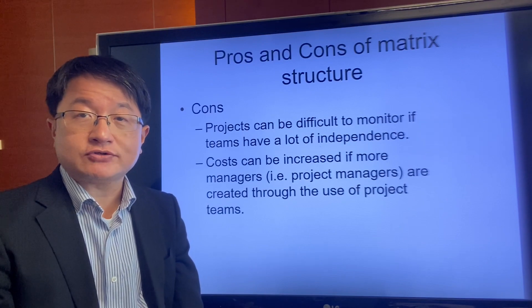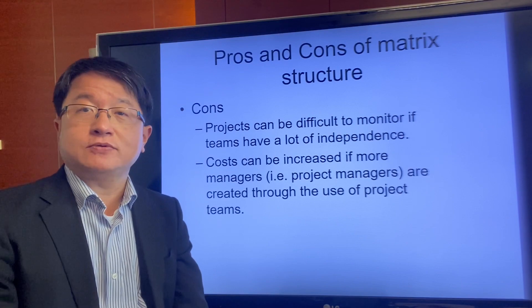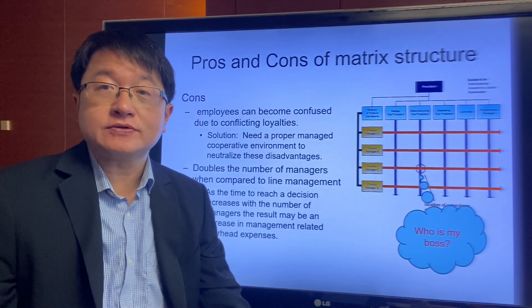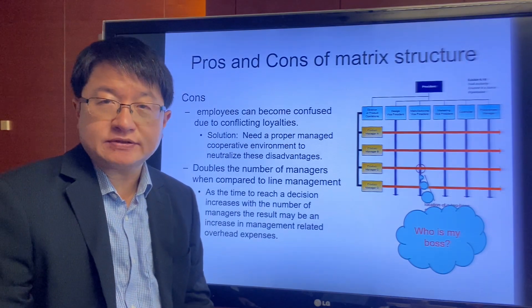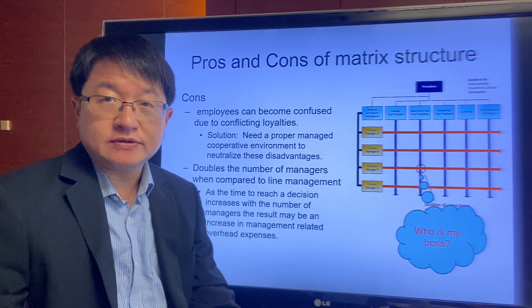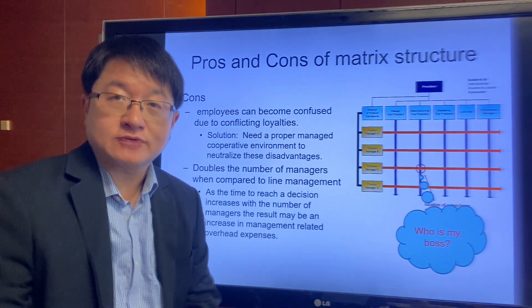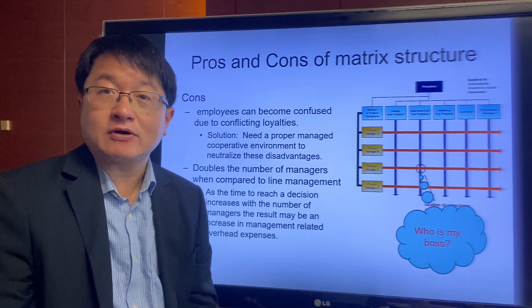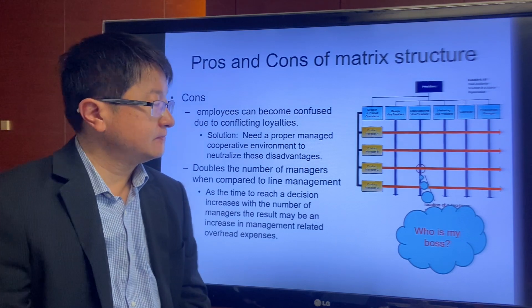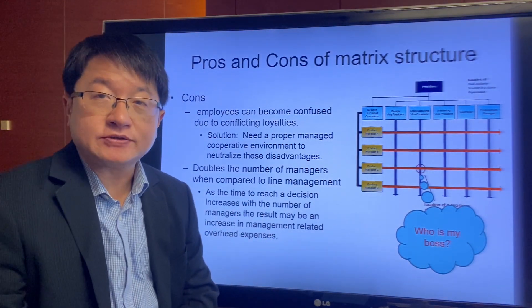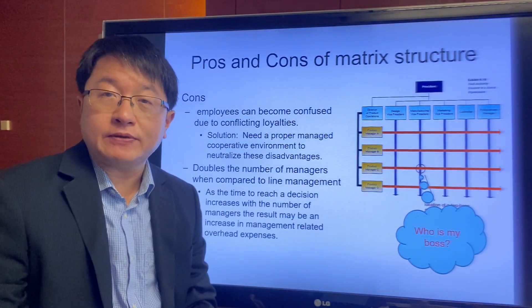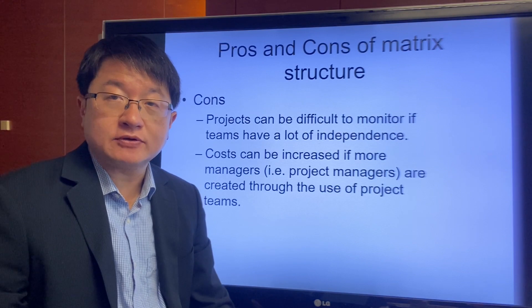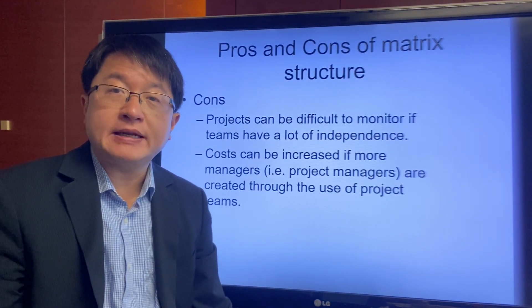The major disadvantage of the matrix structure is that the reporting line may be unclear. A staff member is supposed to report to the functional head and also the project manager, and employees may be confused about who the real boss is. If two bosses give conflicting directions, it creates conflicts between departments. Additionally, the number of managers increases — instead of one manager per staff member, you need two — doubling costs and making monitoring difficult due to too many decision makers.